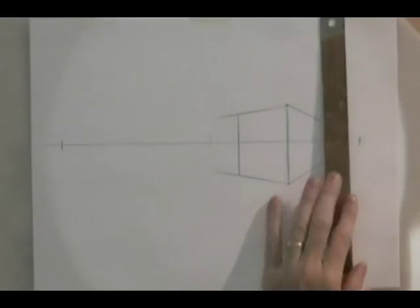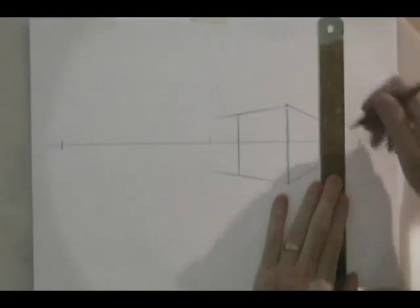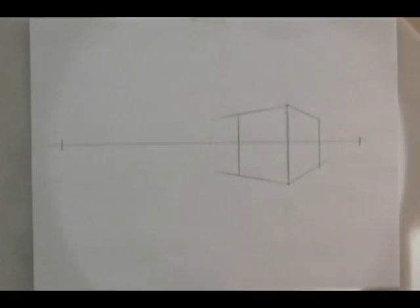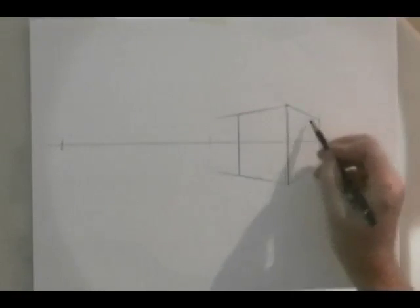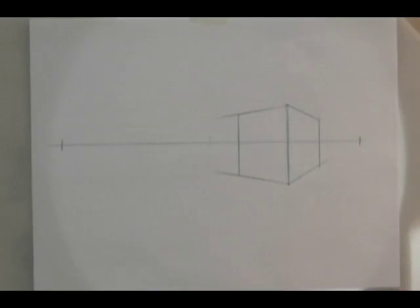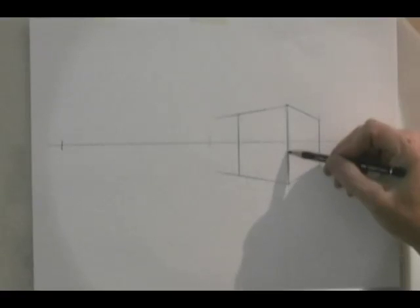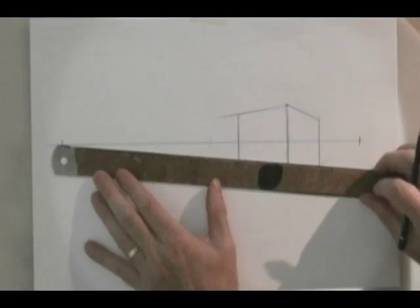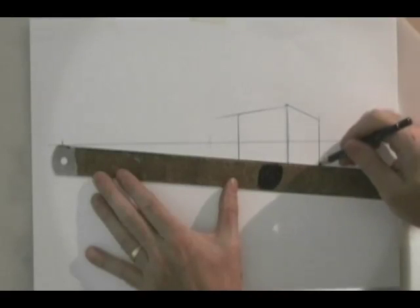And go from the top and the bottom to the opposing vanishing point on the right-hand side. And again, determine the depth of the box that you want to draw.